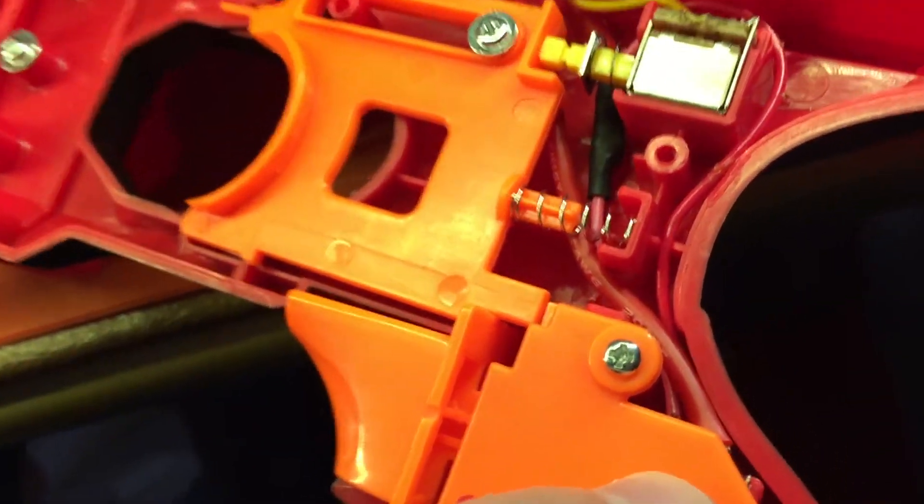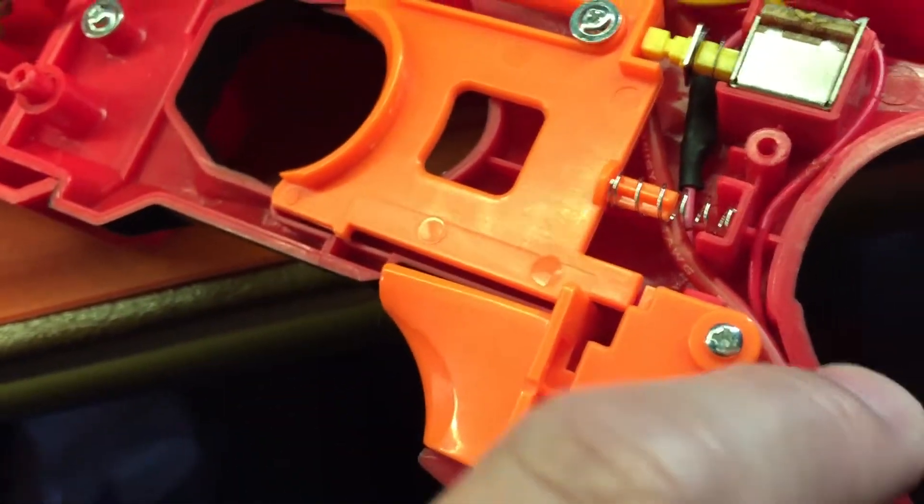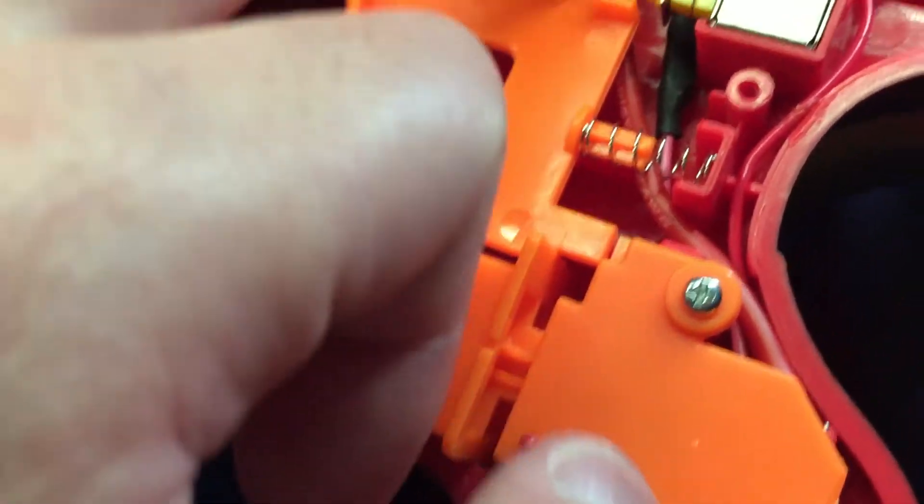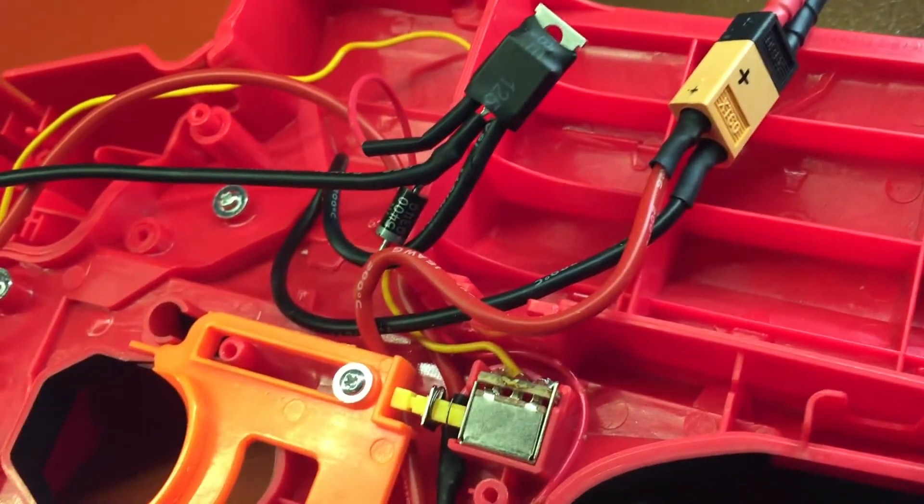The 16 gauge wire here goes into the positive pin on our XT60 connector.